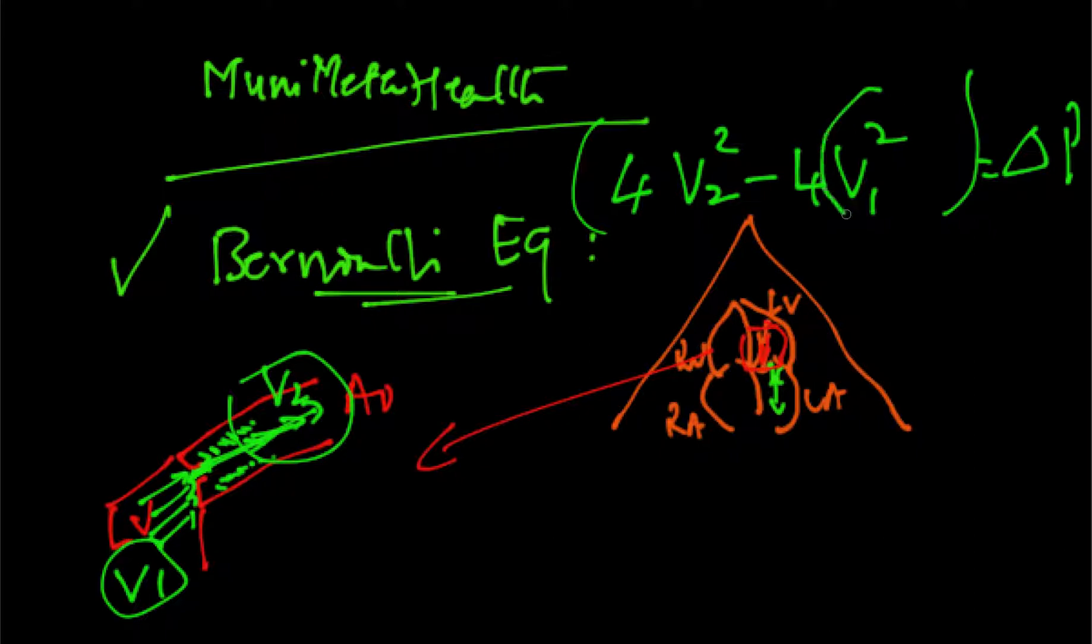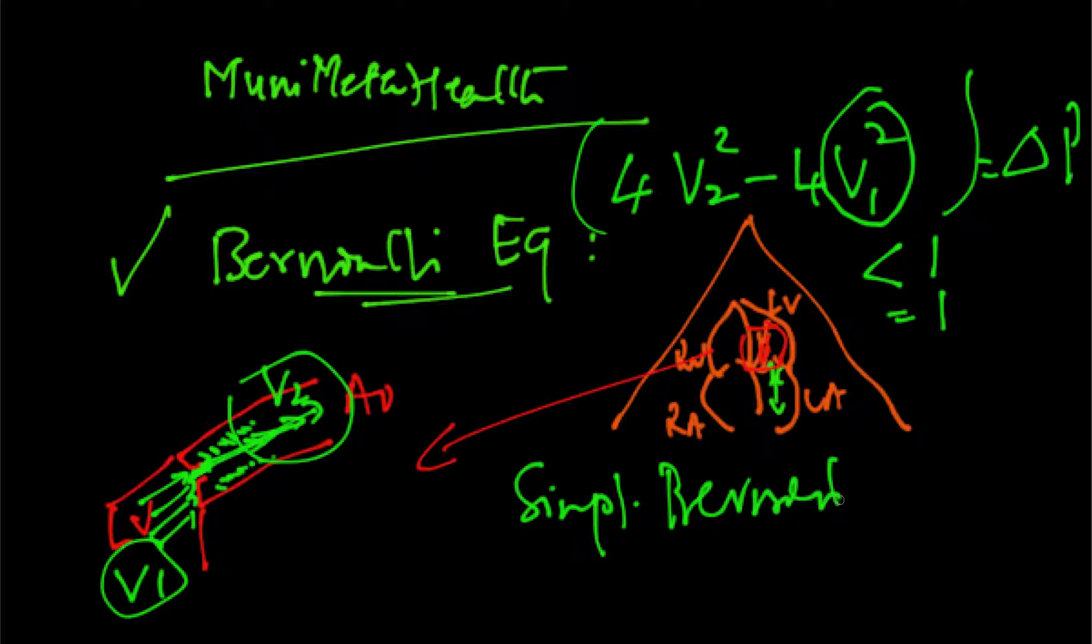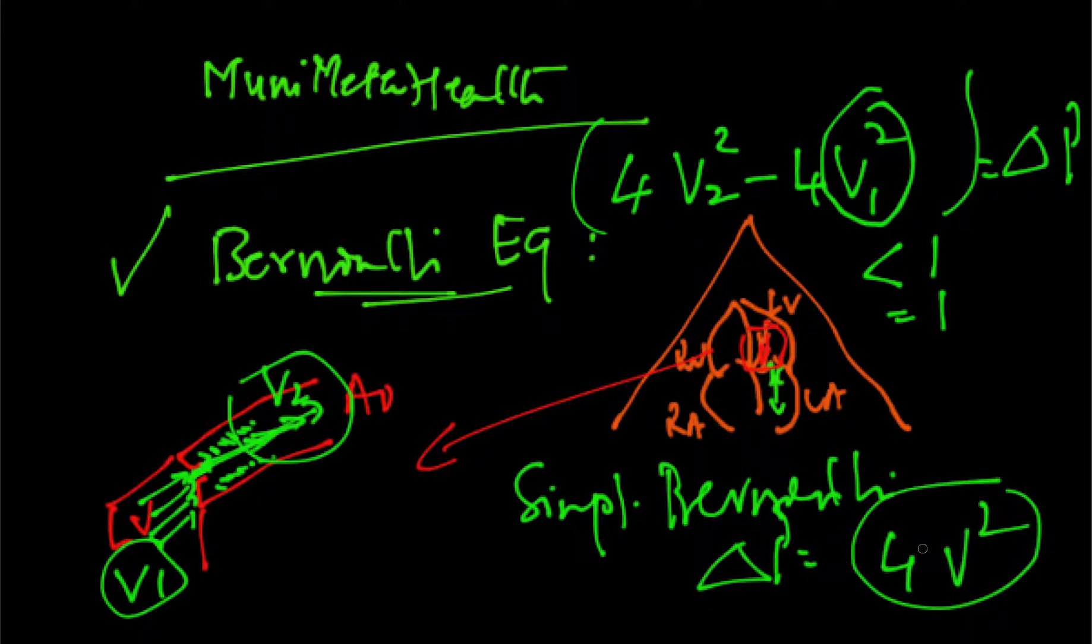Now, assuming that V1 squared is always less than 1 or equal to 1, you get the simplified version. The simplified Bernoulli becomes delta P is equal to 4V squared. How about that? So that's easy now.